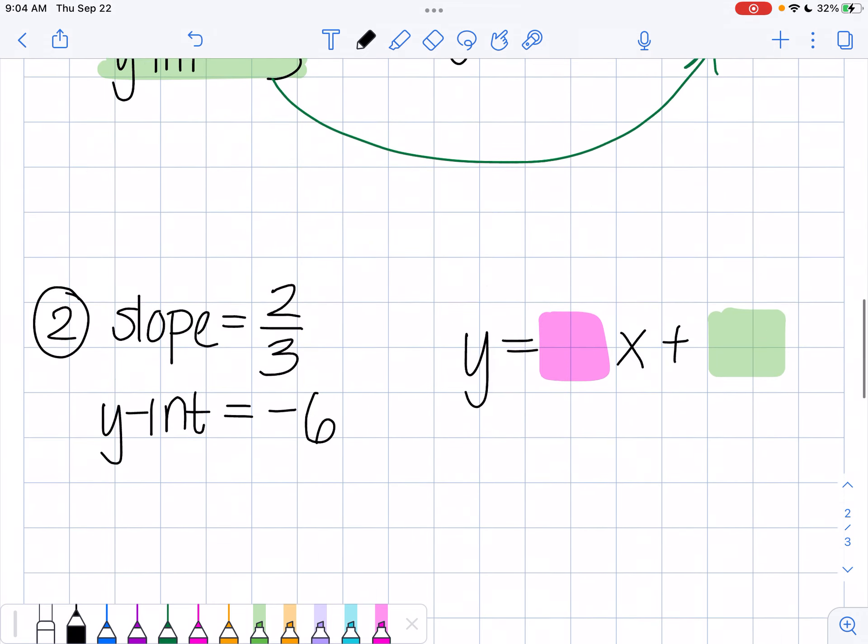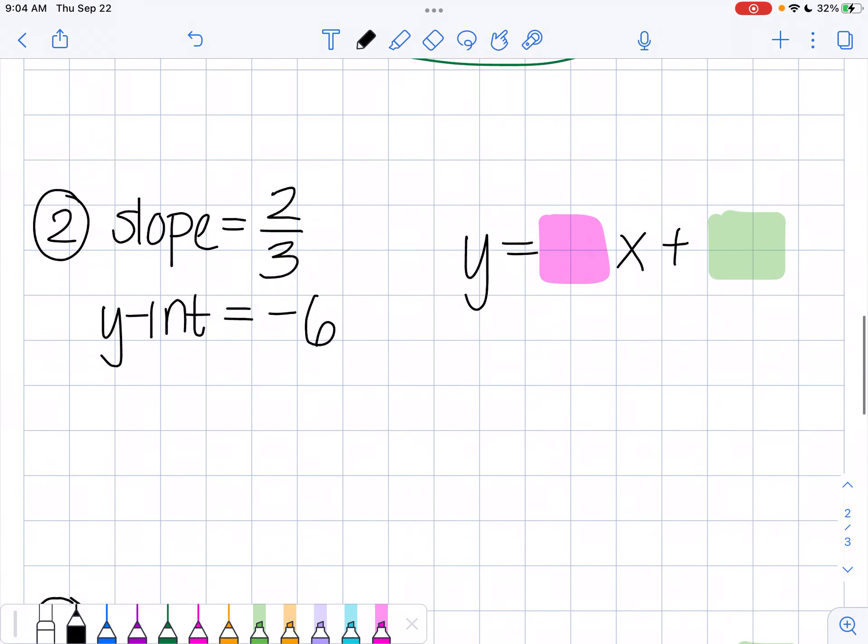Let's try the next one. In this case, I'm telling you that my slope is 2 thirds and my y-intercept is negative 6. Remember, again, our equation is y equals mx plus b, where m represents our slope and b represents our y-intercept.